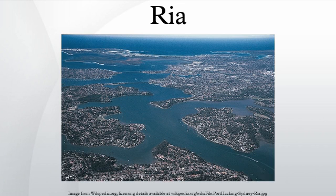Often there are islands, which are summits of partly submerged pre-existing hill peaks. A ria coast is a coastline having several parallel rias separated by prominent ridges, extending a distance inland.